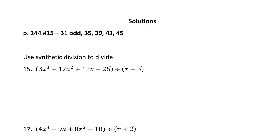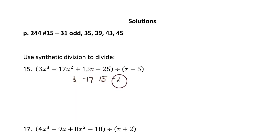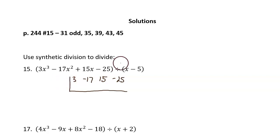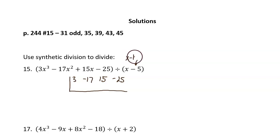To use synthetic division to divide, you write down the coefficients of this polynomial: 3, negative 17, 15, and negative 25. Then make the synthetic division bracket, and you're going to divide a number in on the outside. You get that number by looking at this position. The basic format of the binomial you divide by is x minus k. k is the number after the minus sign, so in this problem it's the 5.